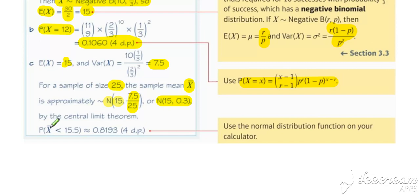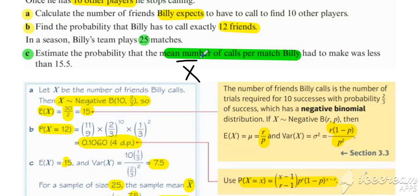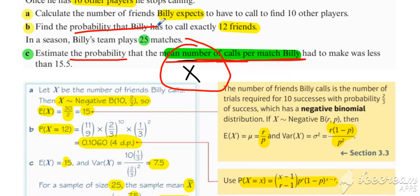We want to work out the probability that X-bar is less than 15.5, then use your calculator to get the answer. It's this change of emphasis we need to look out for—the mean number of calls per match. You need to carefully study your probability statement and consider whether it's about X-bar or about X. That's what to look for with central limit theorem questions.